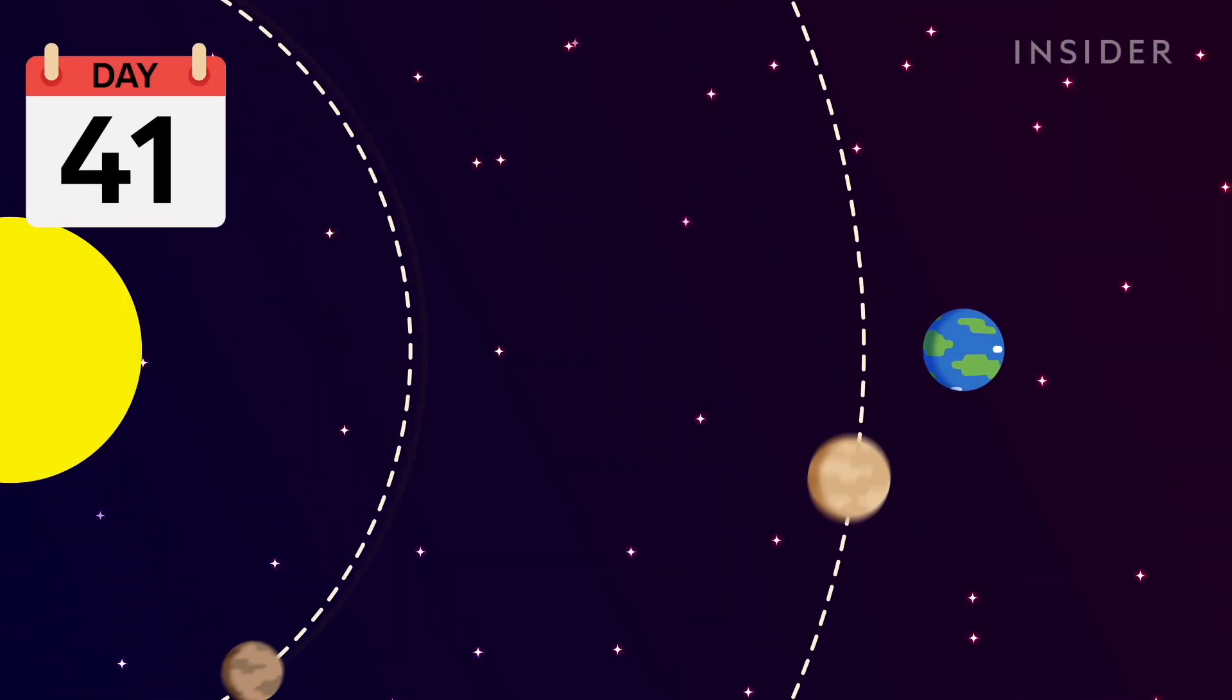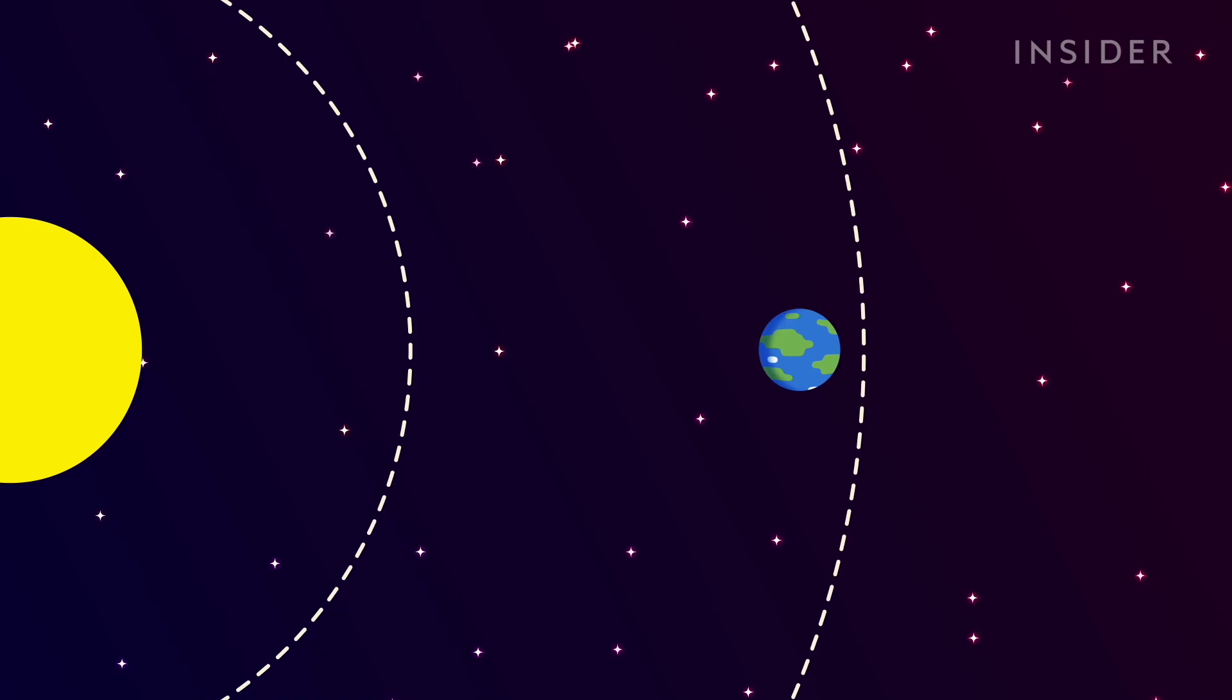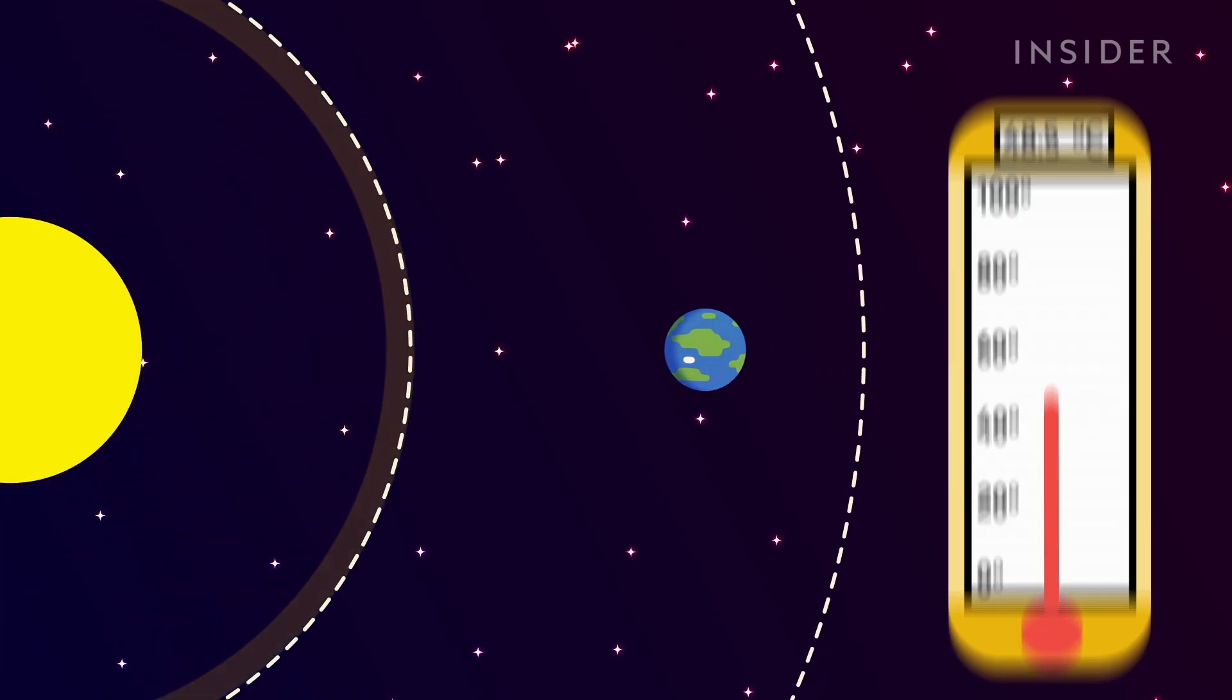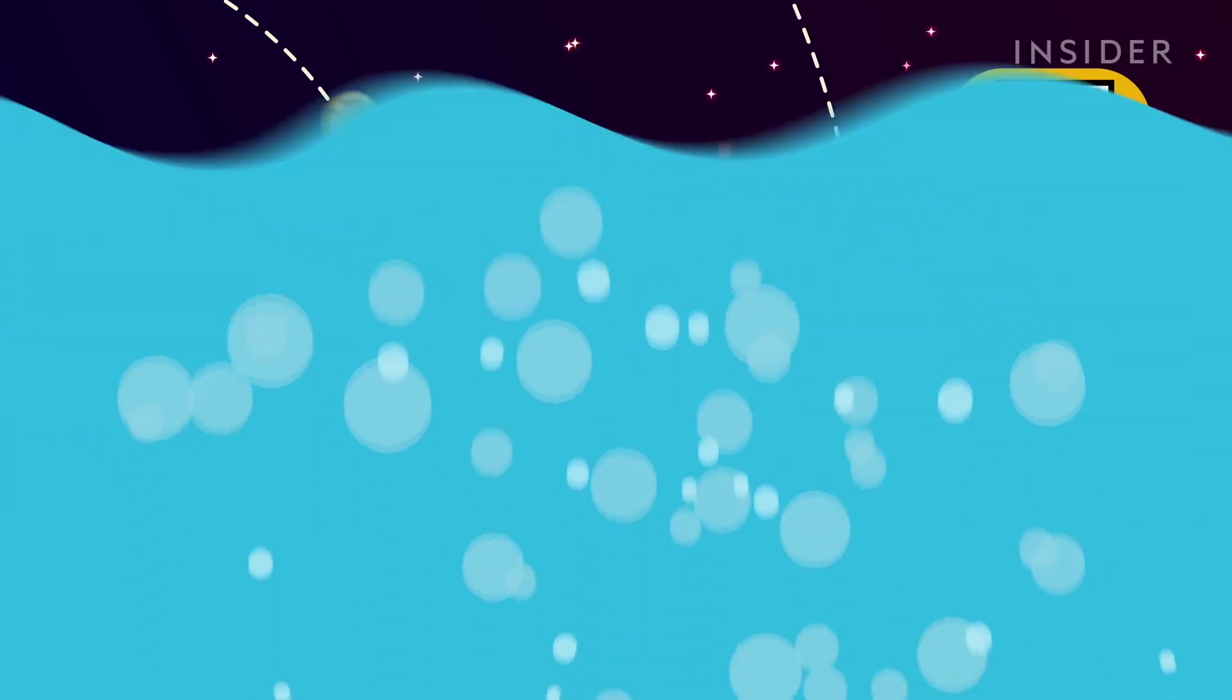By day 41, the Earth has passed by Venus. We're now the second planet from the sun, and temperatures have climbed to 66 degrees. But believe it or not, some creatures still cling to life, like Thermus aquaticus, a bacteria that lives in Yellowstone's hot geysers.